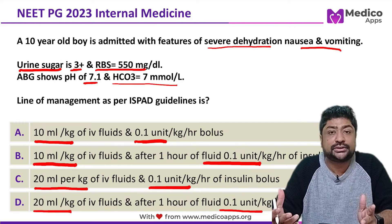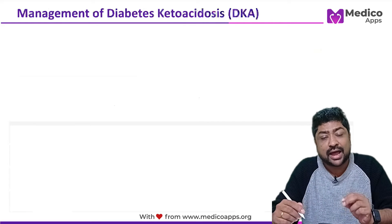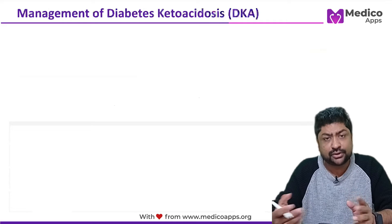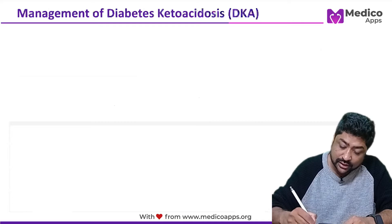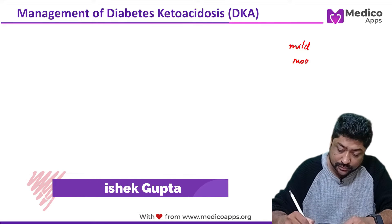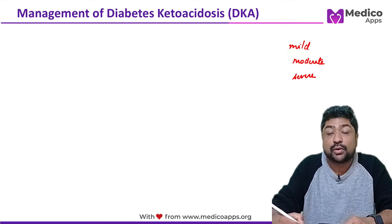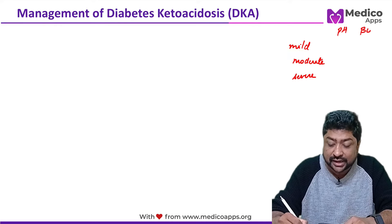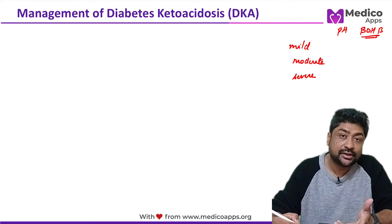This is a very important question both clinically and for examinations. Let's look at the management of diabetic ketoacidosis. Before managing DKA, we classify patients into mild, moderate, and severe categories based on two parameters: the pH and the beta-hydroxybutyrate level, which are the ketone bodies formed in DKA patients.